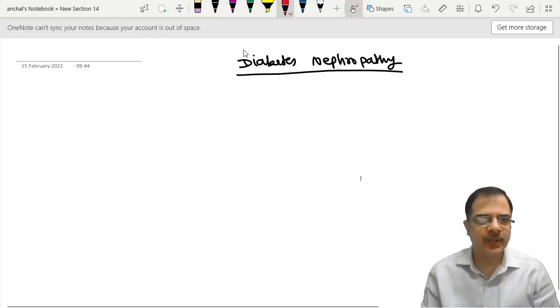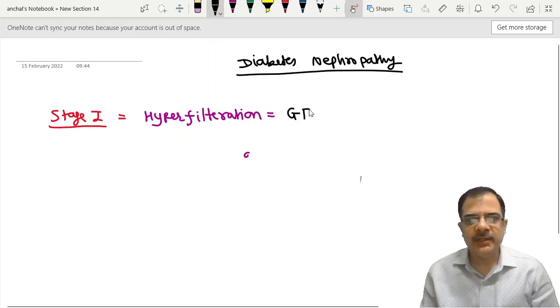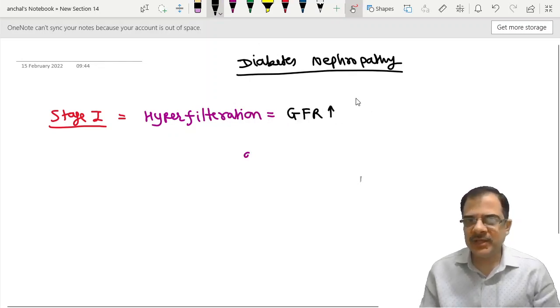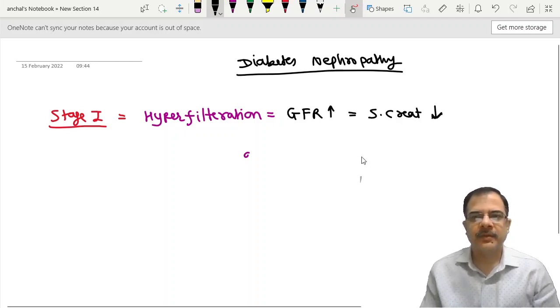Five stages it will progress through. If we look at stage 1 of diabetes nephropathy, stage 1 is unique in the sense that it shows hyperfiltration. Hyperfiltration means GFR is increased here. So uniquely GFR is high, and if the GFR is high, the serum creatinine value reduces. Very characteristic.